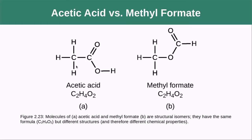In acetic acid, we have a central carbon with three hydrogens bound to another carbon. In methyl formate, the central carbon has three atoms around it but is instead bound to an oxygen, which is then bound to a carbon. Even though they contain the same atoms, they are structurally arranged differently and have very different properties.